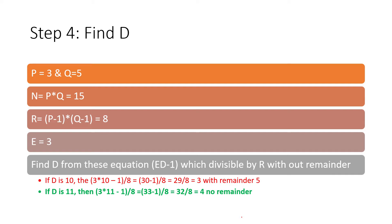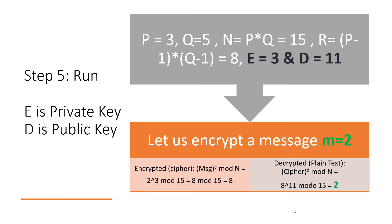For example, if you give 10, 10 will give you a result 29. If you divide the 29 by the R value, then you get 3 remainder 5. But the condition is the value of D should be something which gives you the result with no remainder. So if I choose D is equal to 11, then 3 multiple of 11 minus 1 divided by 8, I'm gonna give me 32 by 8, that is 4 without any remainder. So now I got E and D, that is my private and public key. The value of E is 3 and D is 11.